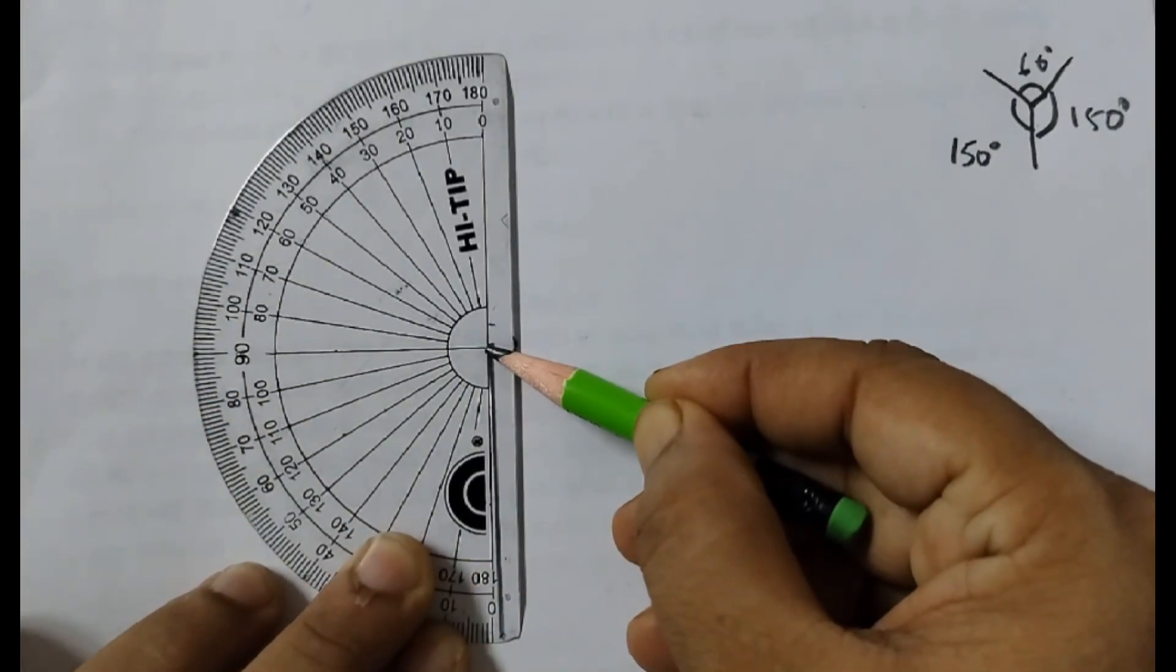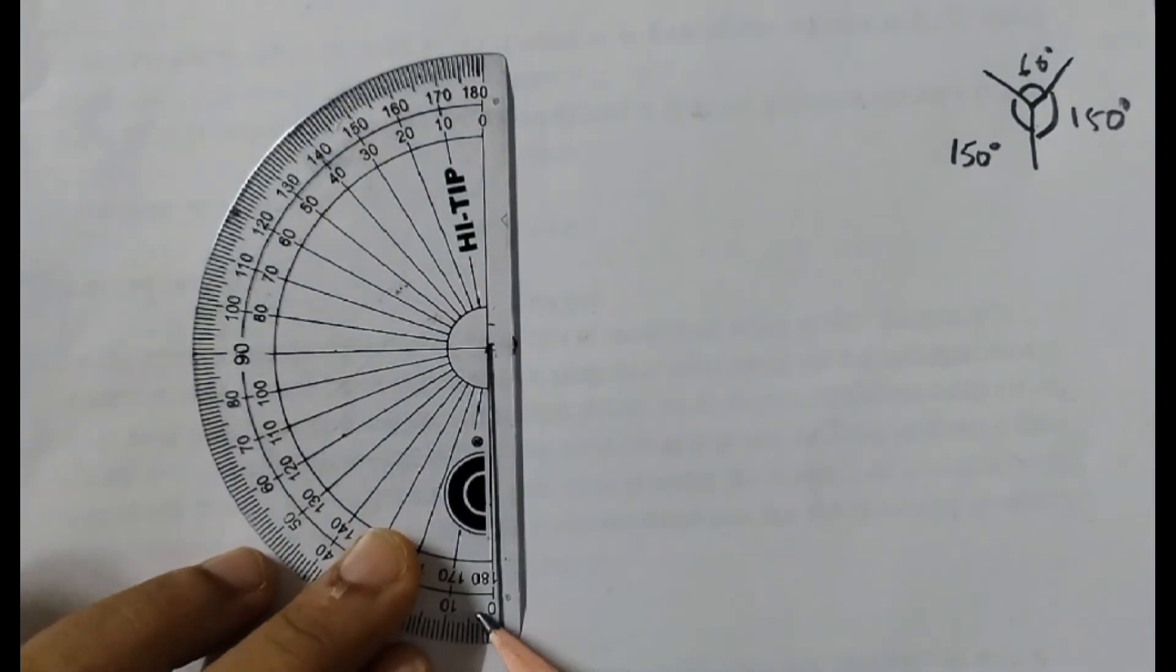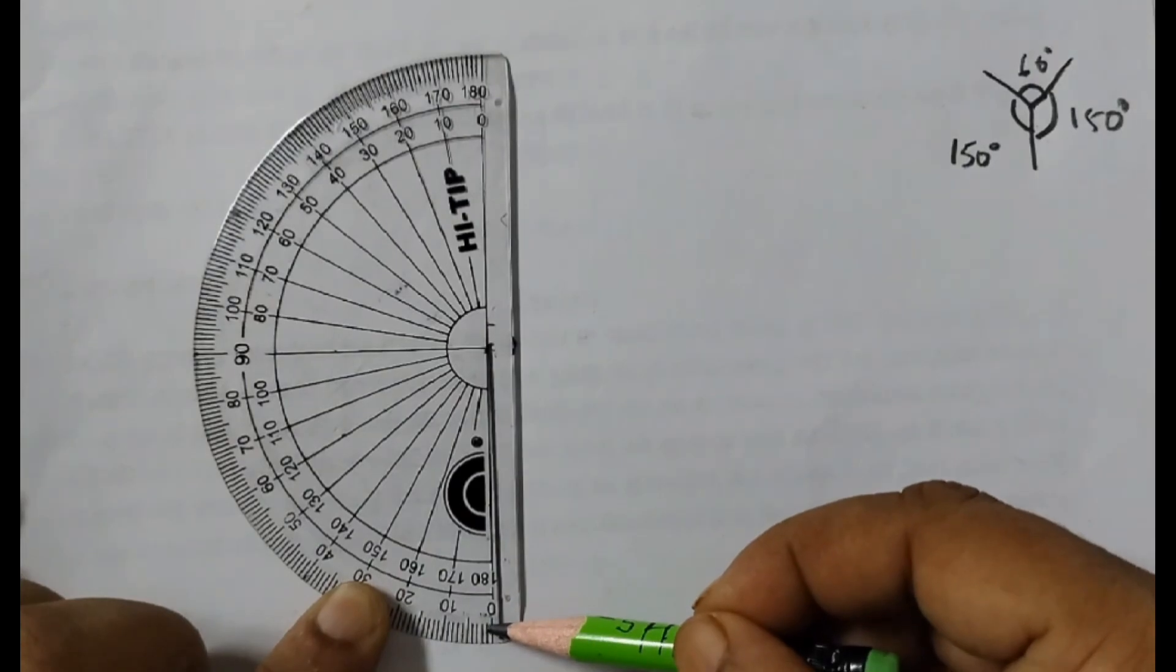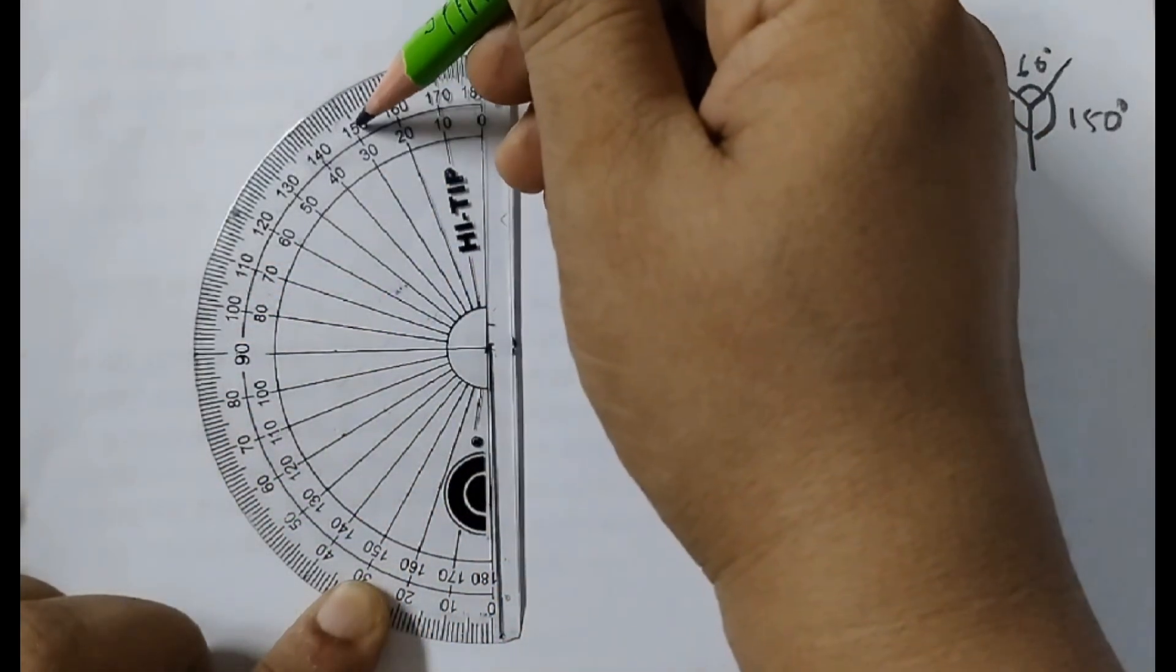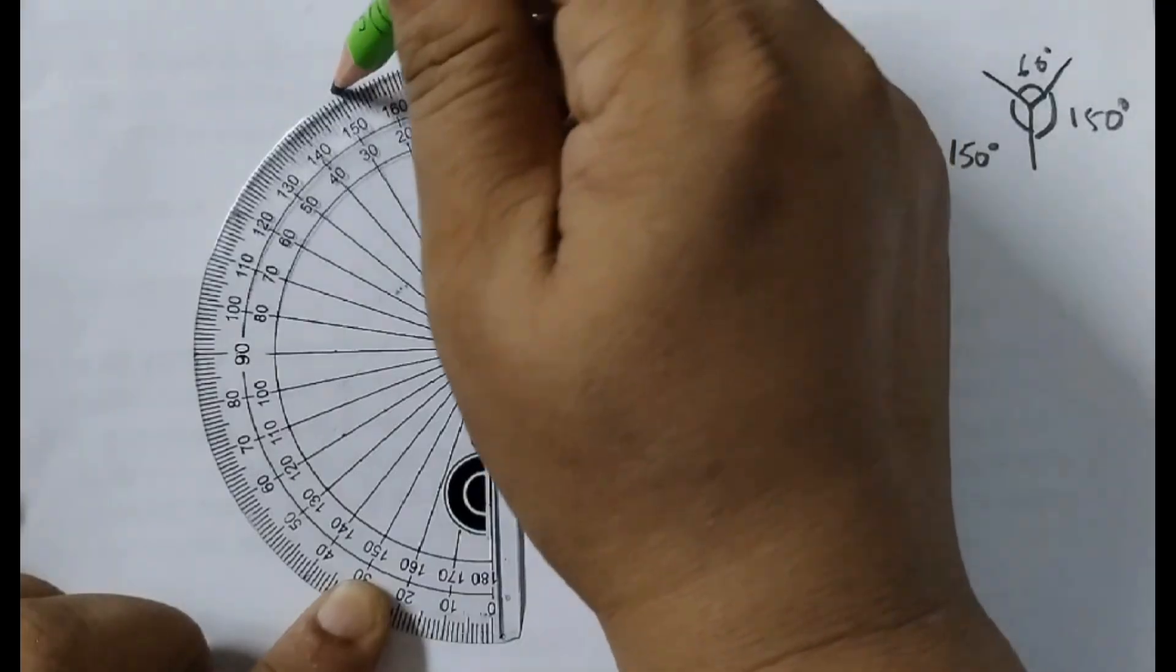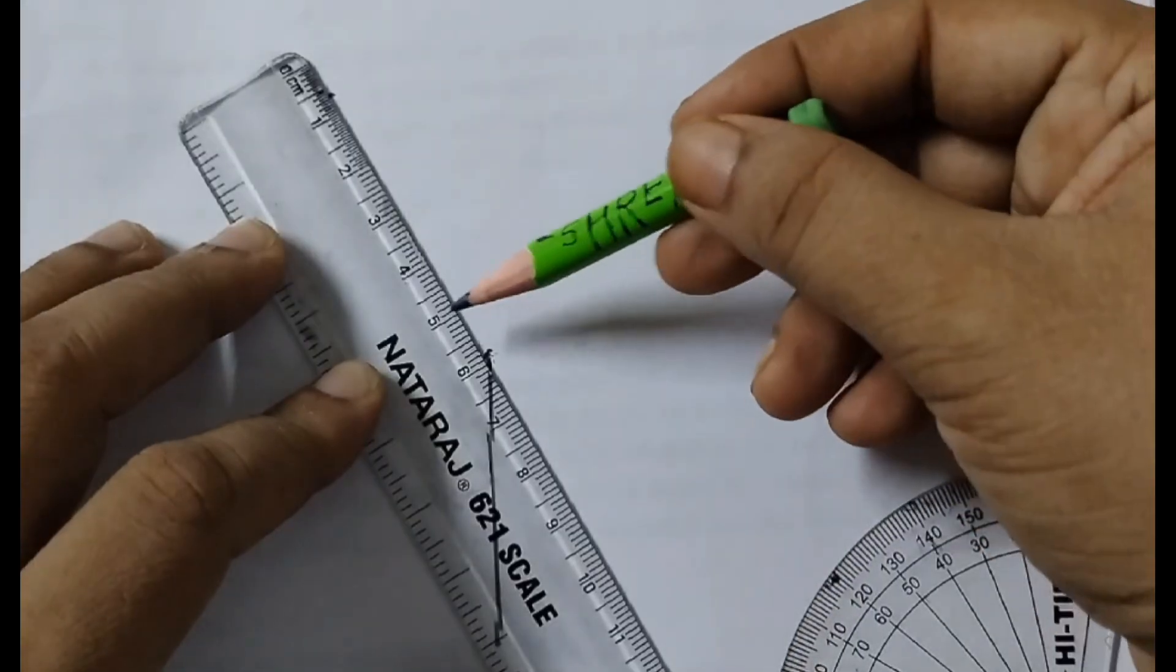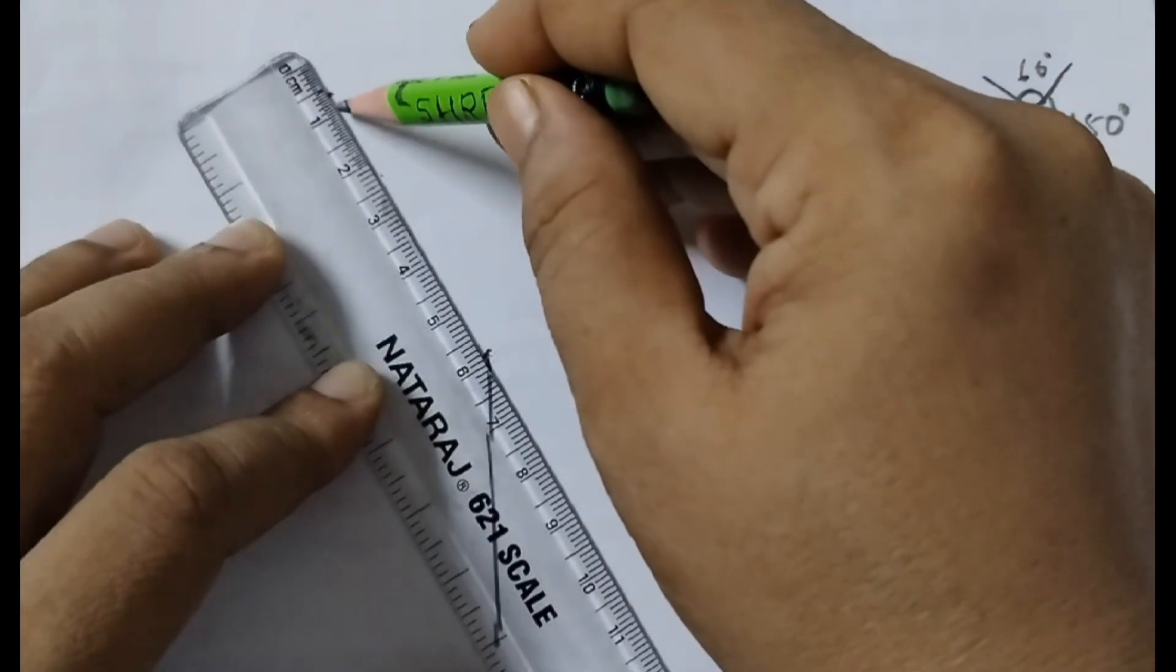This is the vertex and we want 150 degrees. So we will see where it starts from 0, so 0, 10, 20, that is the outer set of numbers we have to see and 150 is here. Mark a point here. So here we will take 1, 2, 3, 4, 5, say 5 cm.